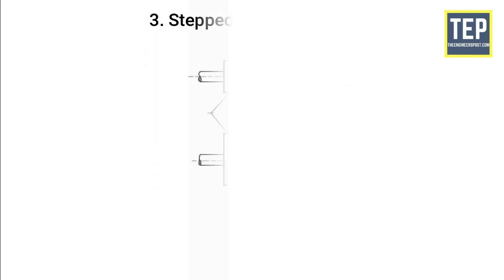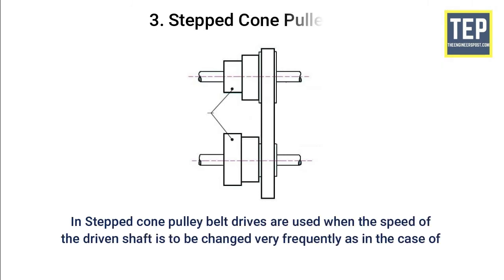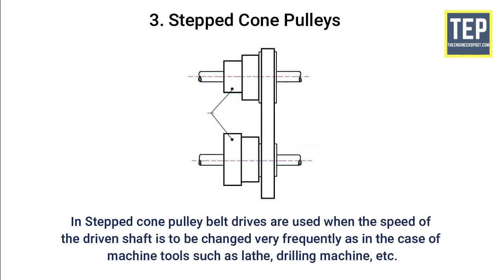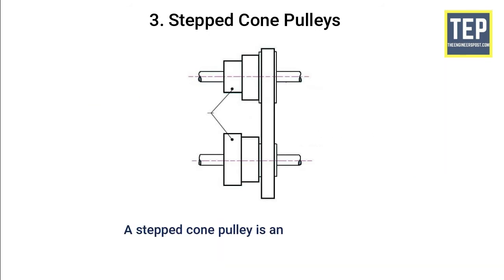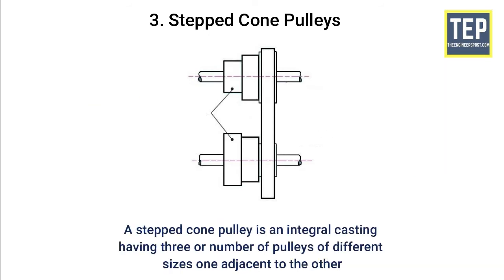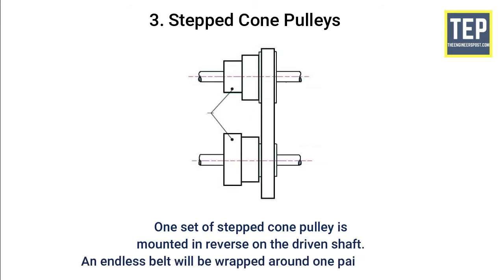In stepped cone pulley belt drives, the belt is used when the speed of the driven shaft is to be changed very frequently, as in machine tools such as lathes and drilling machines. A stepped cone pulley is an integral casting having three or more pulleys of different sizes, one adjacent to the other. One set of stepped cone pulleys is mounted in reverse on the driven shaft, and an endless belt is wrapped around one pair of pulleys.